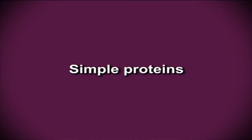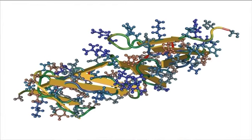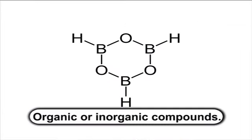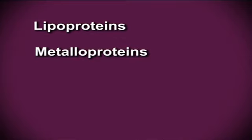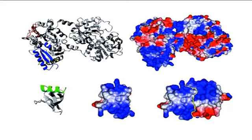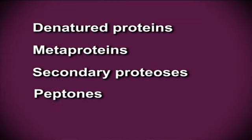Proteins are also classified as simple proteins, which yield only amino acids on hydrolysis — examples include protamine, albumin, globulin. Conjugated proteins are made up of simple proteins (the apoprotein) and a non-protein substance known as the prosthetic group. They yield not only amino acids but also other organic or inorganic compounds — examples include nucleoproteins, chromoproteins, glycoproteins, phosphoproteins, lipoproteins and metalloproteins. Derived proteins are formed from simple and conjugated proteins and are degradation products obtained by the actions of acid, alkalis or enzymes on proteins — examples include denatured proteins, proteases, peptones, polypeptides, simple peptides and amino acids.